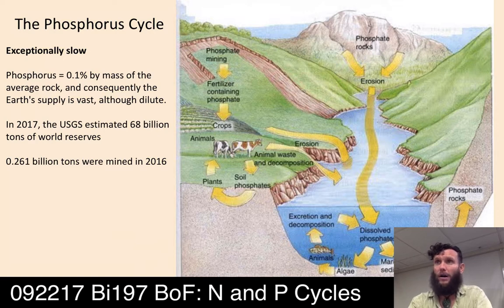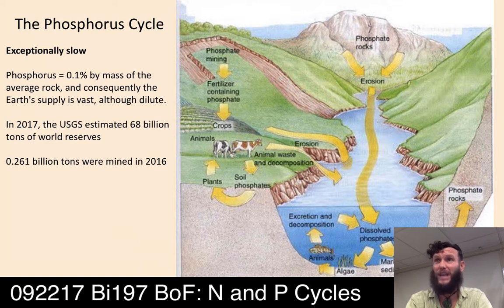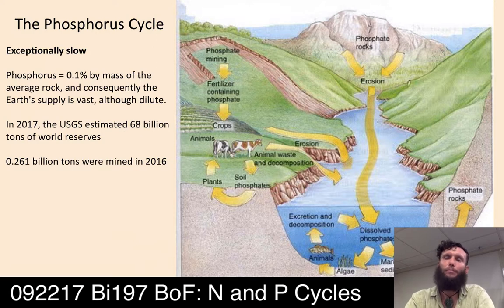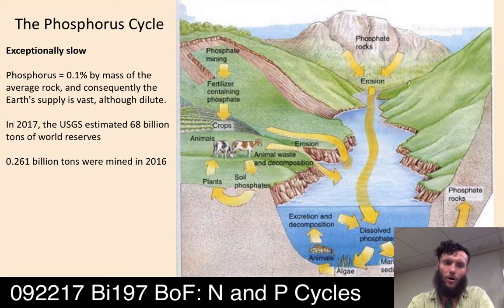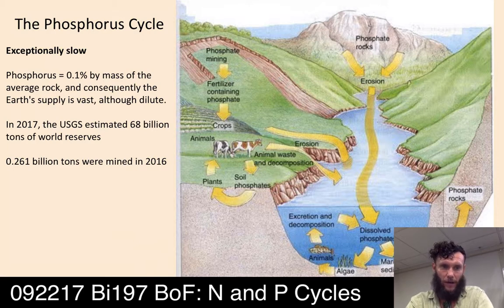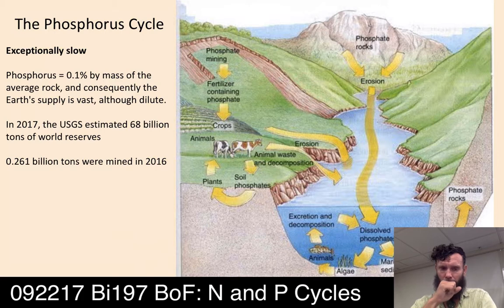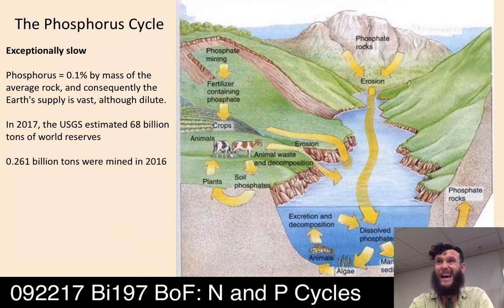The bulk of global phosphate is in rocks, though only about a tenth of a percent of rocks contain phosphorus. It's vast but extremely dilute and hard to extract. In 2017, the USGS estimated about 68 billion tons of phosphorus in the world's mountains, rocks, and bedrock — but about a quarter billion tons were mined in 2016 alone.